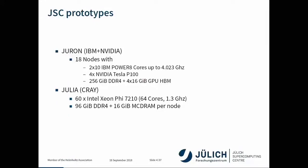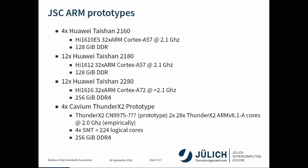We also have some prototypes: JURON by IBM plus NVIDIA and JULIA by Cray, but JULIA is also JURON-based. The more interesting part are the JSC ARM prototypes. We've got a couple of systems by Huawei and also the KVM ThunderX2 processors. The Huawei machines weren't set up enough for me to run a lot of benchmarks on them, so I will be focusing on the ThunderX2.